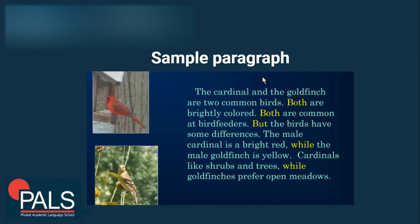Let's take a look at a sample paragraph: 'The cardinal and the goldfinch are two common birds. Both are brightly colored. Both are common at bird feeders. But the birds have some differences. The male cardinal is bright red while the male goldfinch is yellow. Cardinals like shrubs and trees while goldfinches prefer open meadows.' As you can see, the highlighted words are the clue words and these are our signals to know that this text utilizes compare and contrast structure.